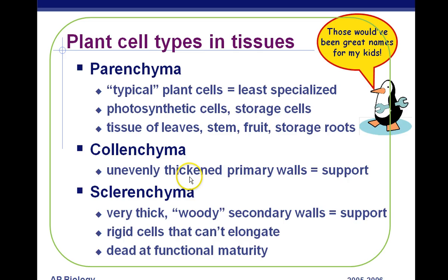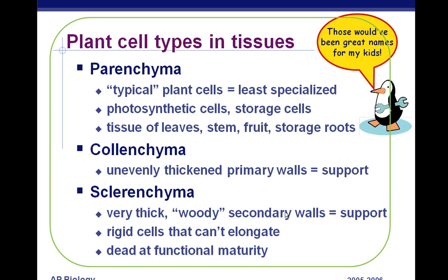Collenchyma has uneven, thickened primary walls for support. Both collenchyma and sclerenchyma are used for support, so if a cell type is not used for support, it's parenchyma. If it is support, it's either collenchyma or sclerenchyma. The key difference: sclerenchyma is dead at maturity — that is a key idea. If you know it's dead support cells, it has to be sclerenchyma. If it's live support cells, then it's collenchyma.